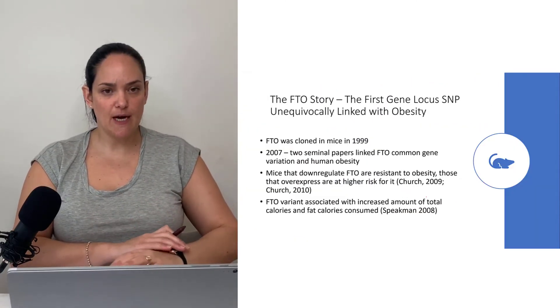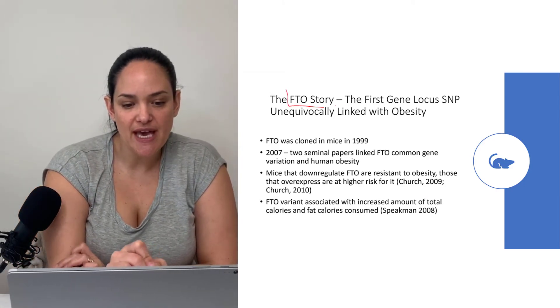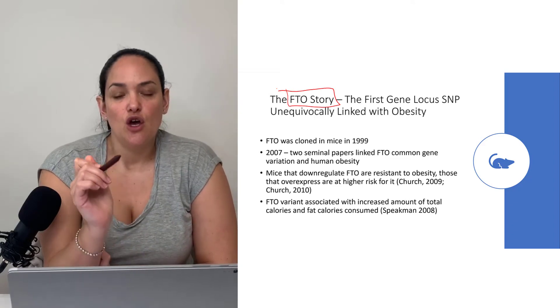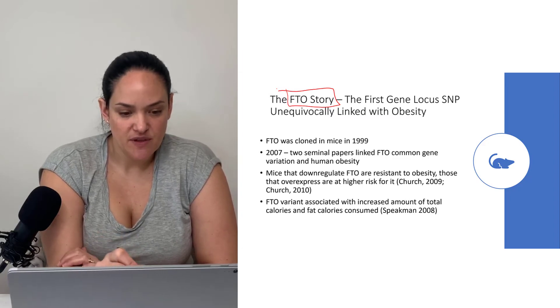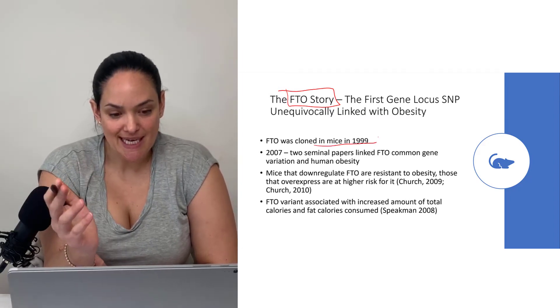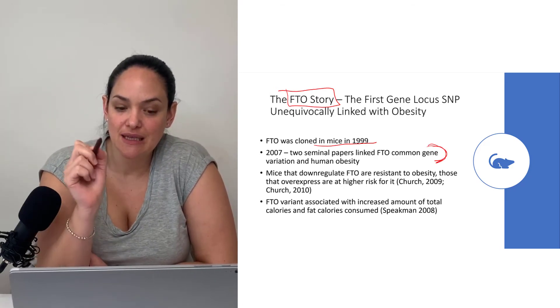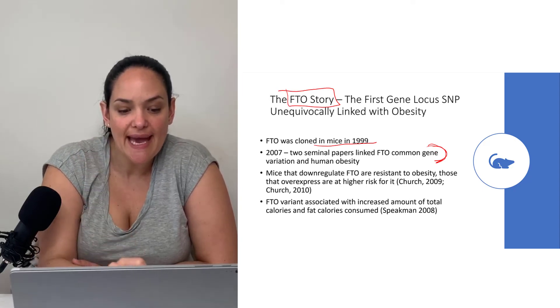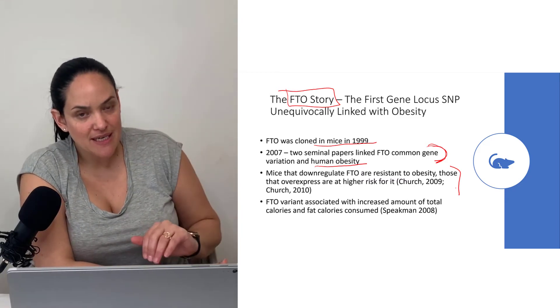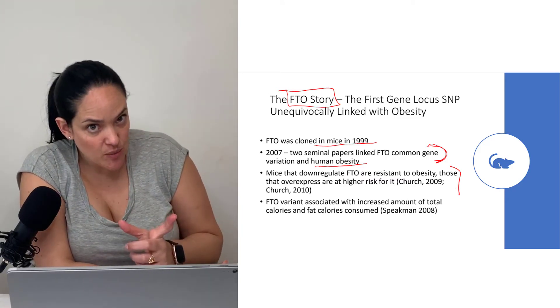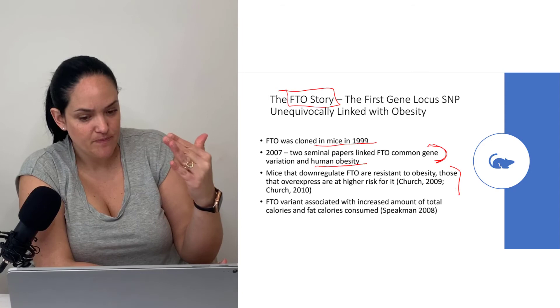The FTO story brings us to the fat mass associated gene. It was first cloned in mice in the late nineties, and in 2007, two seminal papers linked this FTO gene and human obesity.